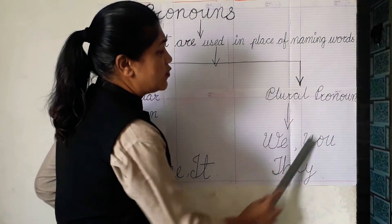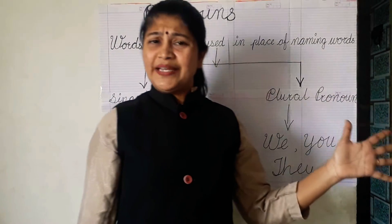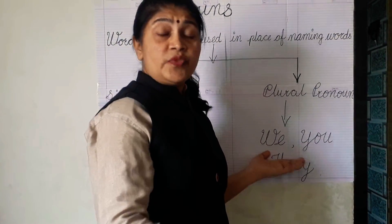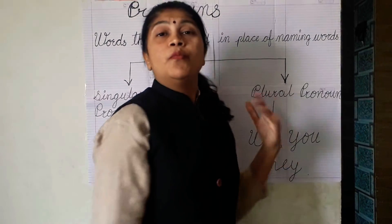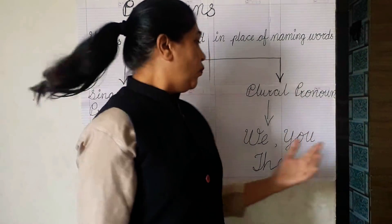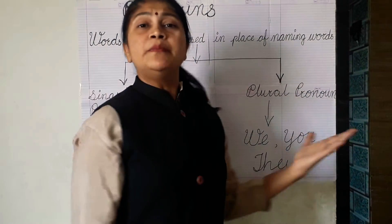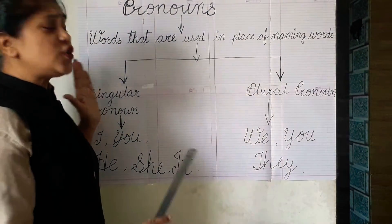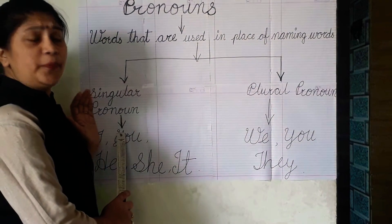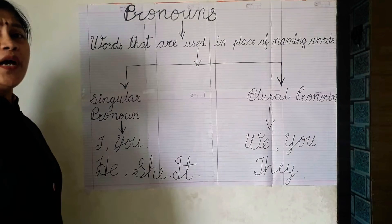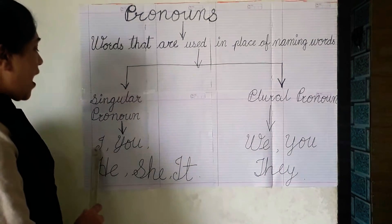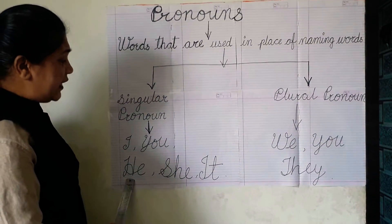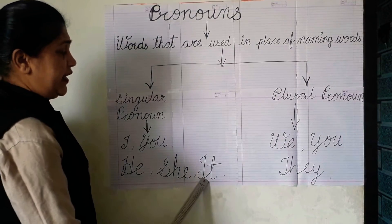Plural pronouns means so many things — more than one thing, more than one person, more than one animal, more than one bird. Today we are talking about only singular pronouns: I, you, he, she, it.